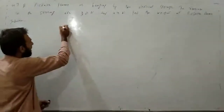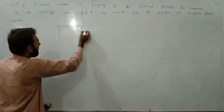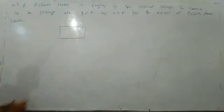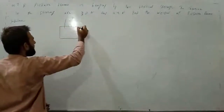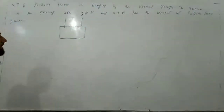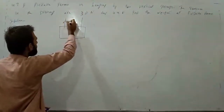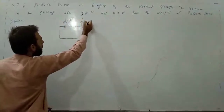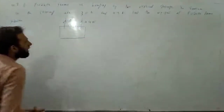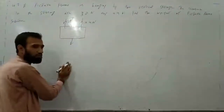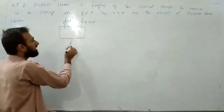A picture frame is hanging. The tension in the string area is 3.8 Newton. The other tension in the string is 4.4 Newton. Find the weight of the picture frame. The weight force always acts vertically downwards.